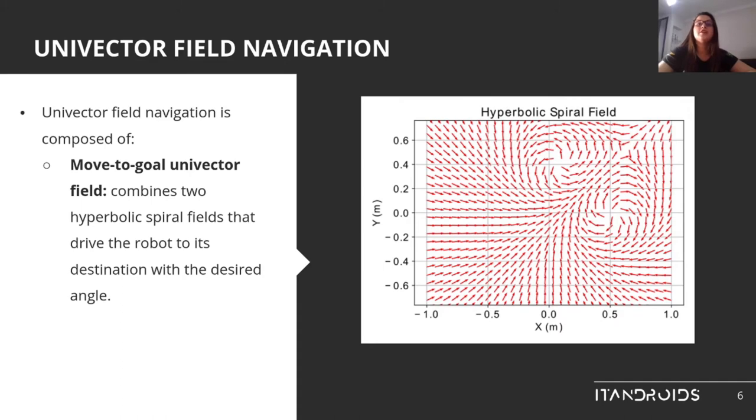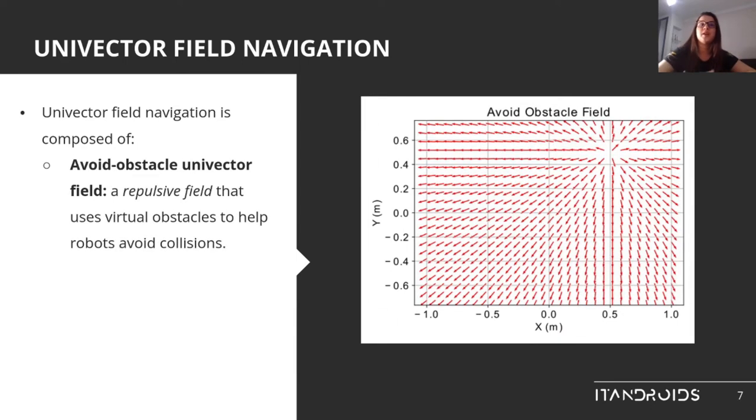Univector field navigation is composed of two fields. The move-to-goal univector field is one of them. It combines two hyperbolic spiral fields that drive the robot to its destination with desired angle. The other one is the avoid-obstacle univector field, a repulsive field that uses virtual obstacles to predict obstacles' movements and help robots avoid collisions.